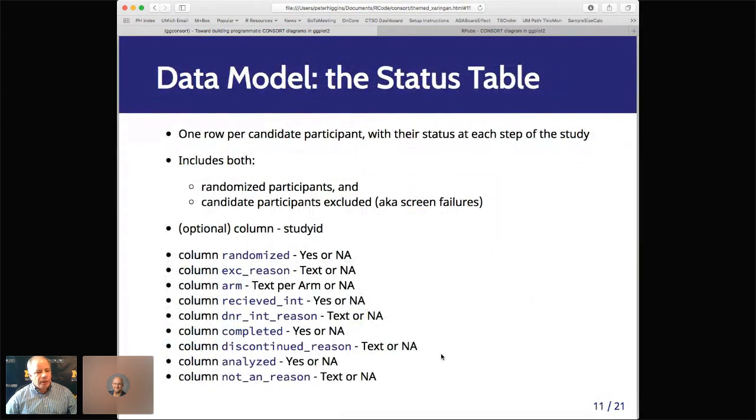And essentially, I wanted to build a status table where you have one row per candidate participant, where there's status at each step of the study as a column. This includes both randomized participants and the candidate participants who end up being excluded, also known as screen failures. In the columns, you can include a study ID, which helps you check your data, but essentially randomized and the exclusion region. And these generally come in pairs. So if they're randomized, they should have an NA for their exclusion region. Or if they're not randomized, they should have an NA and then a text for their exclusion region. And that helps check and cross-validate the data.